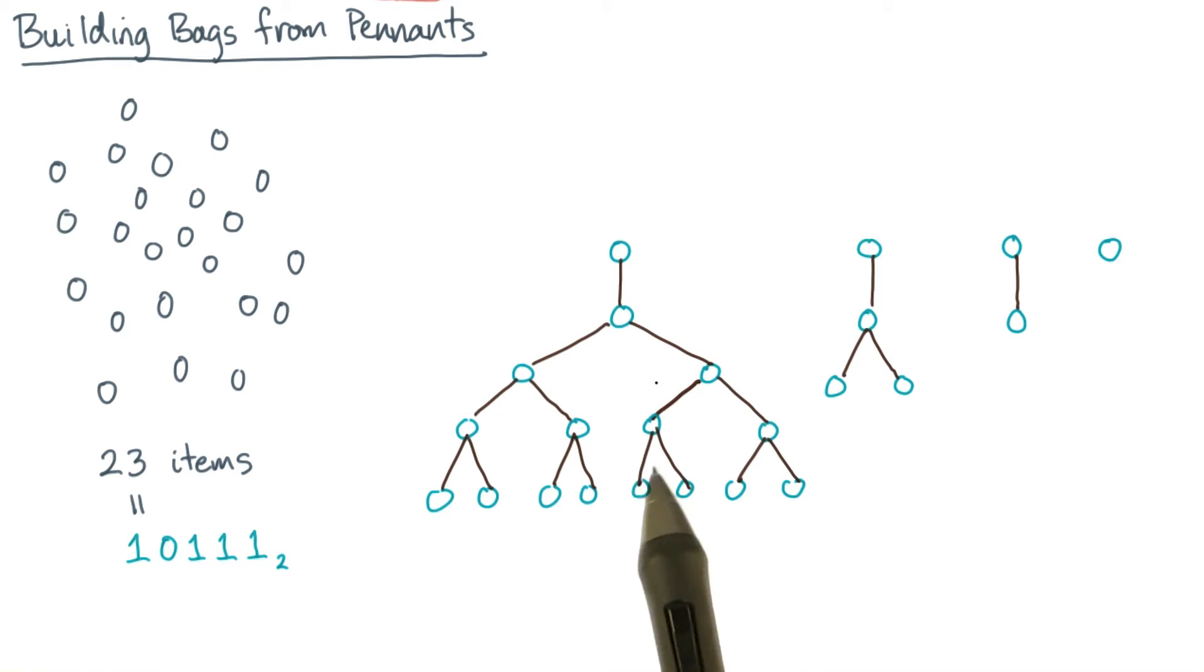So you can see what I've done here. In the same way that you can take the integer 23 and write it as a series or a sequence of powers of 2, I've taken the items in the collection and I've grouped them into powers of 2.